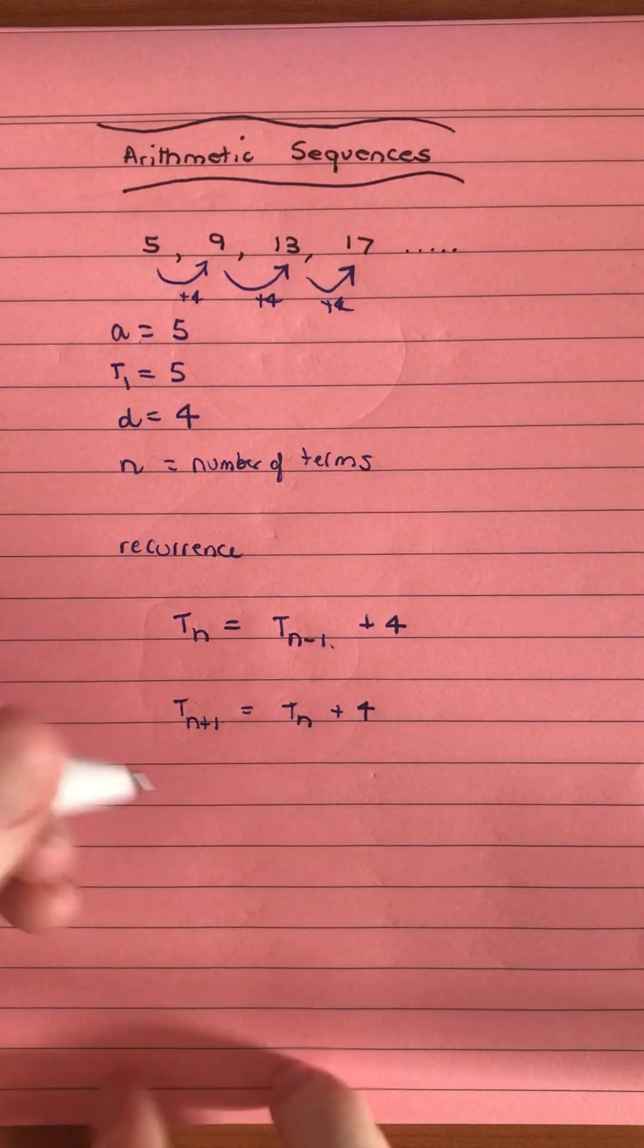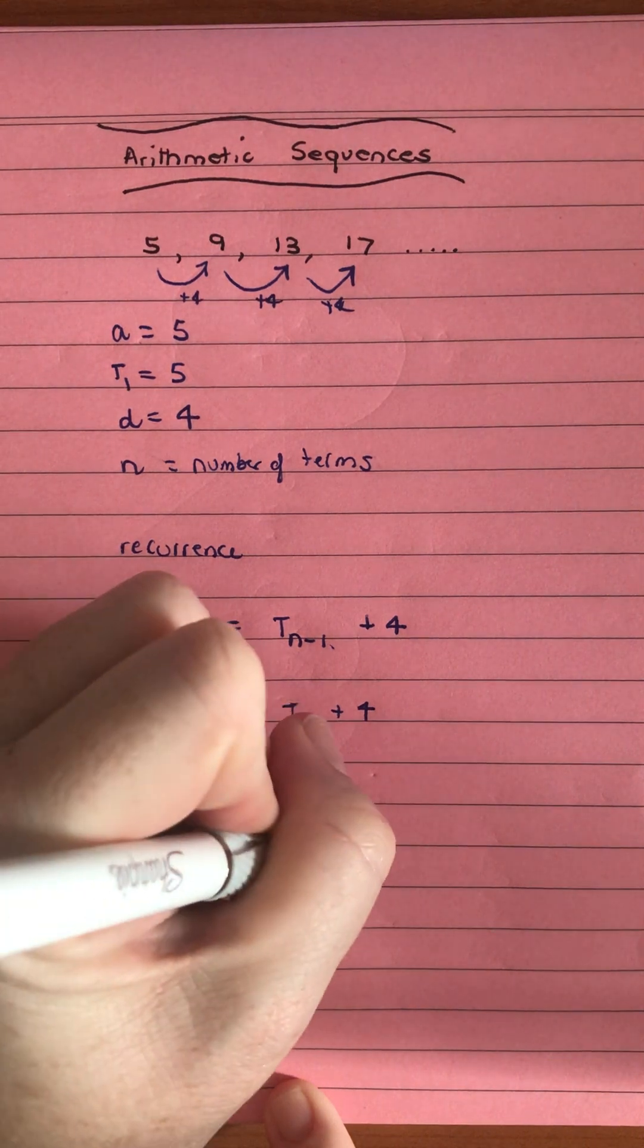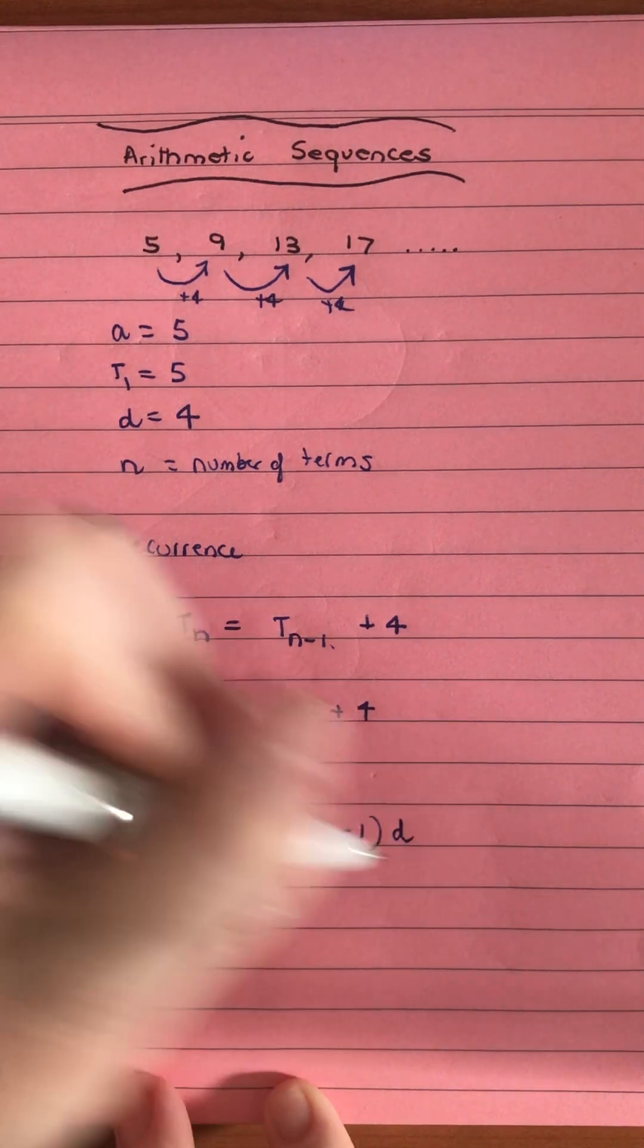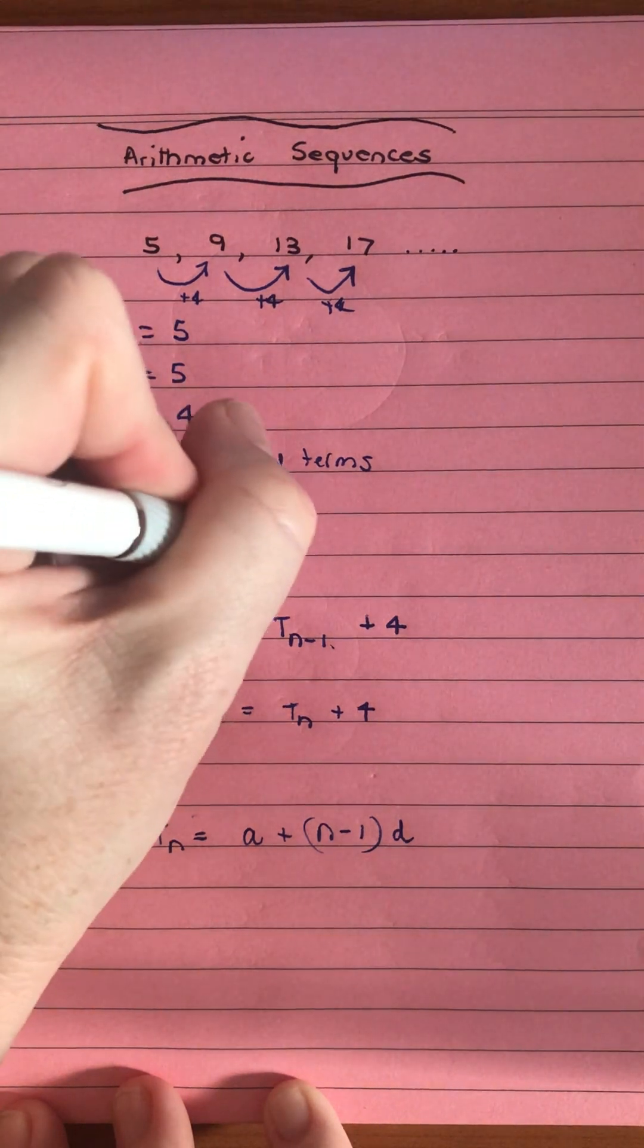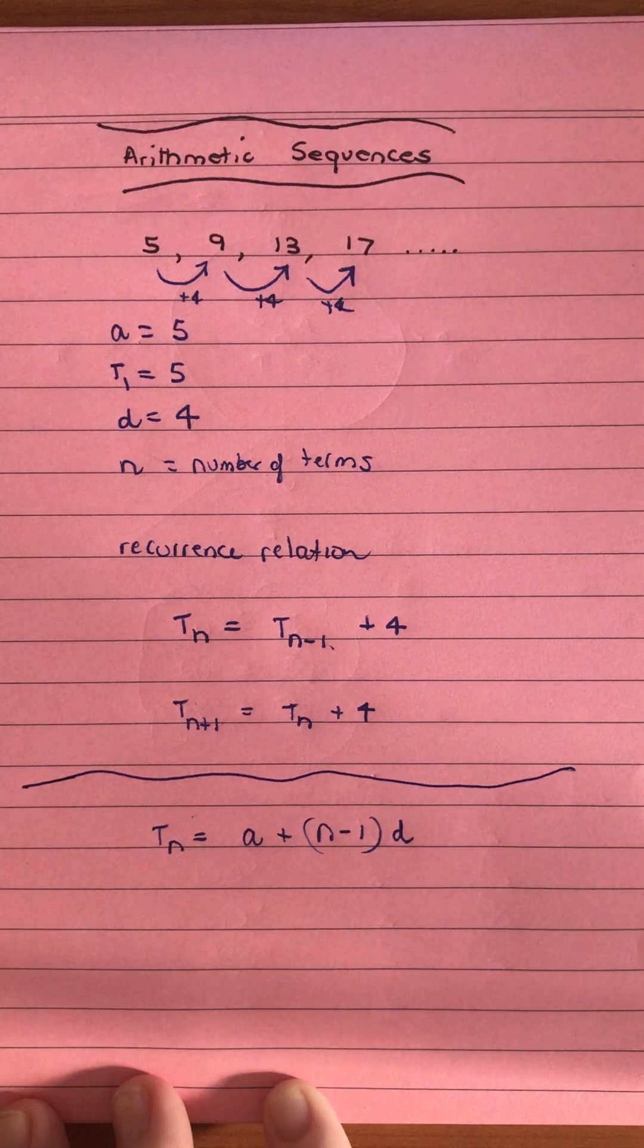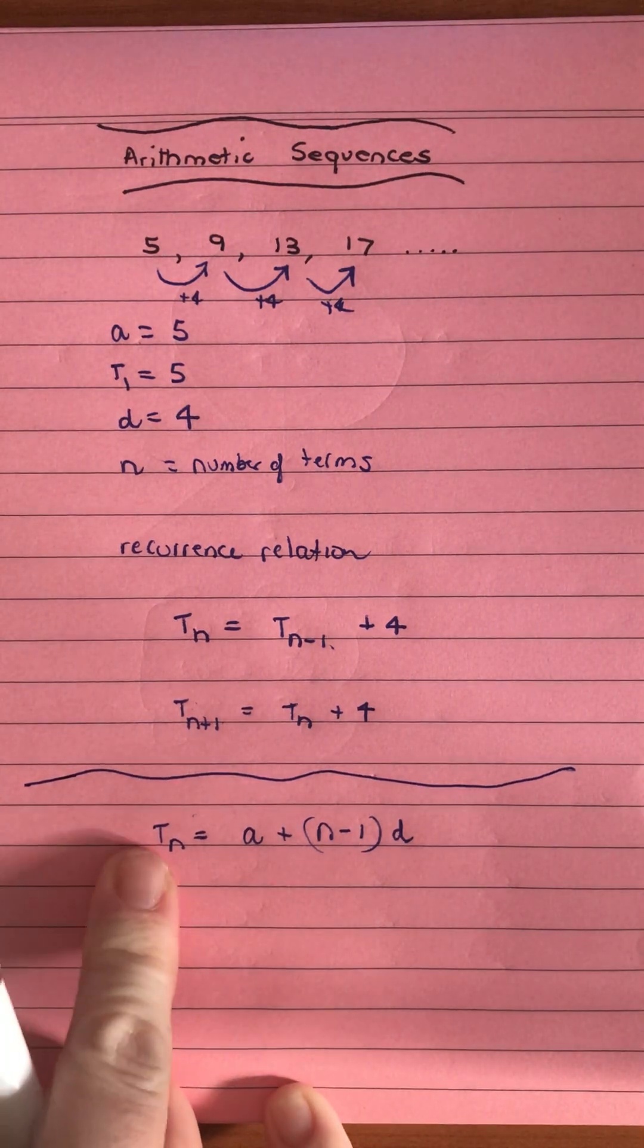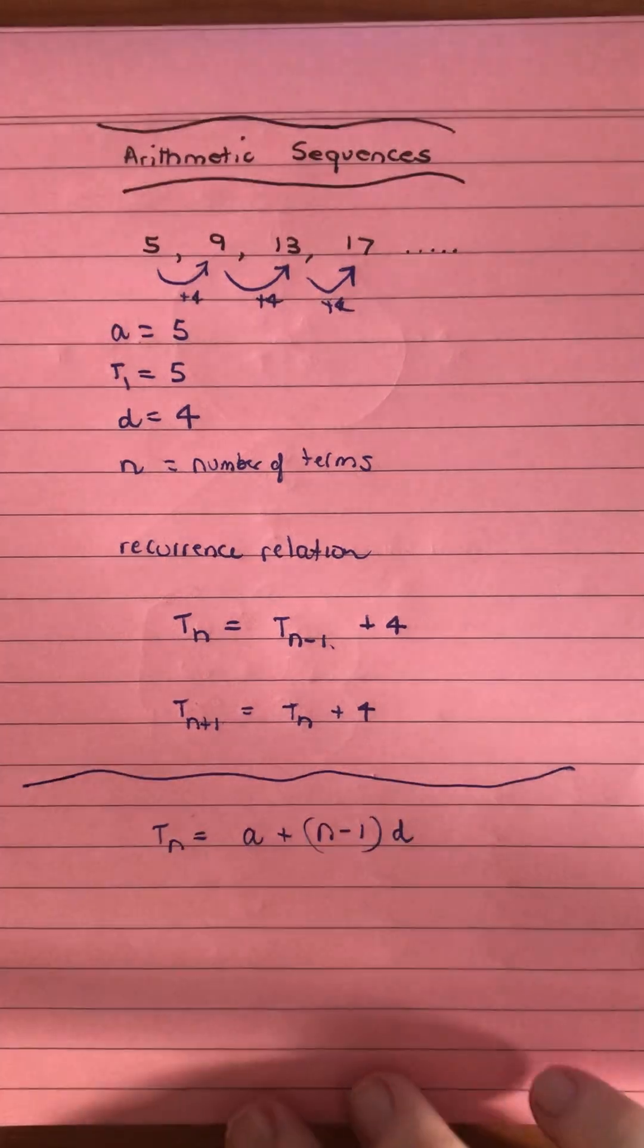We also have a rule where T_n = a + (n-1)d. This is to get any term in the sequence. With a recurrence relation, you're only finding the next term. With the general form, you can find any term in the sequence.